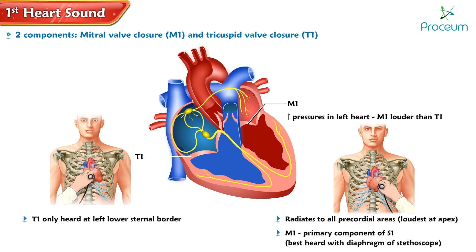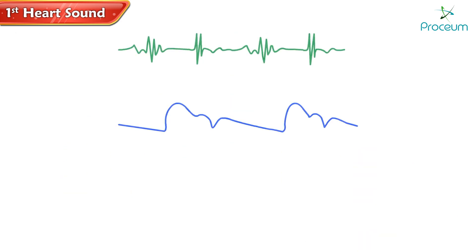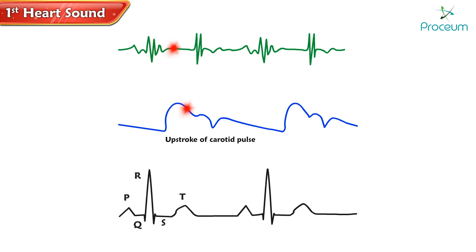The M1 sound is considered the primary component of S1 and is best perceived using the diaphragm of the stethoscope. Importantly, S1 coincides with the upstroke of the carotid pulse, and on an electrocardiogram it aligns with the QRS complex, signifying the initiation of ventricular contraction.